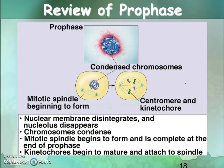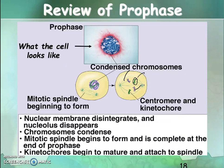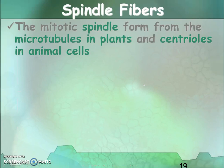To review prophase: the nuclear membrane disintegrates and the nucleolus disappears. Chromosomes condense. The mitotic spindle — these thread-like structures — forms, and the kinetochores begin to mature and attach to the spindle. The spindle fibers, which make up the mitotic spindle, are formed from microtubules and the centrioles in the animal cell.